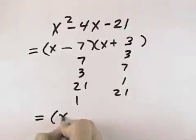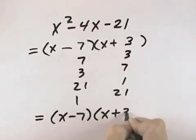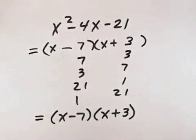So that our factored form is x minus 7 times x plus 3, neither of which can be broken down further, so that is the completely factored form.